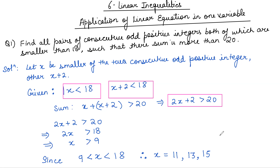First question: Find all pairs of consecutive odd positive integers, both of which are smaller than 18, such that their sum is more than 20. So we are going to break and study this problem.